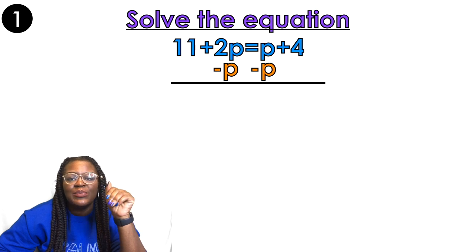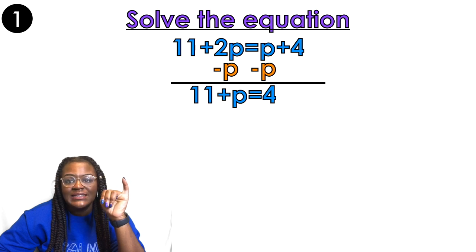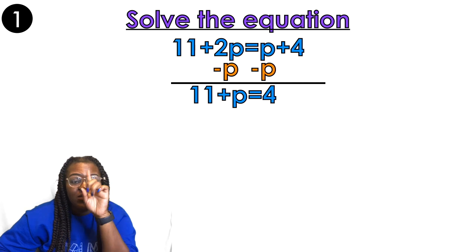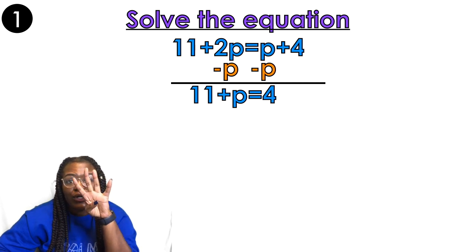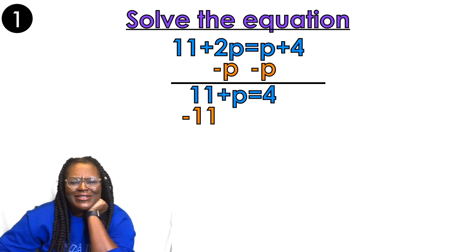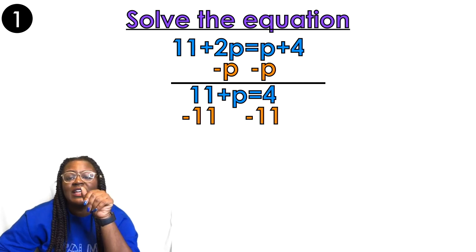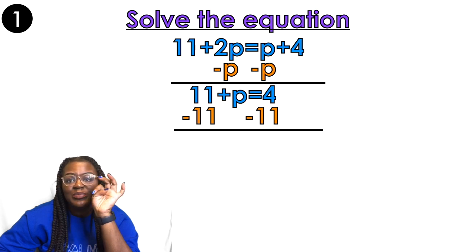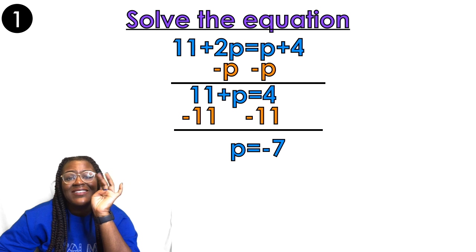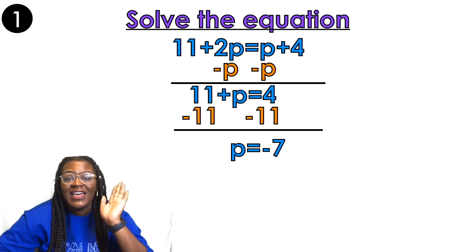When I subtract p from both sides, I bring 11 down, and 2 minus 1 is 1p. The p's cancel out, leaving plus 4. Now I'm going to move my constants to the other side of the equation away from my variable. I'm going to subtract 11 on both sides, and when I bring down the p, I get p equals negative 7. I have an answer!